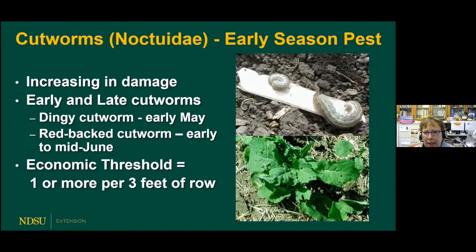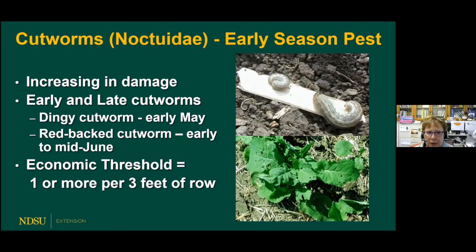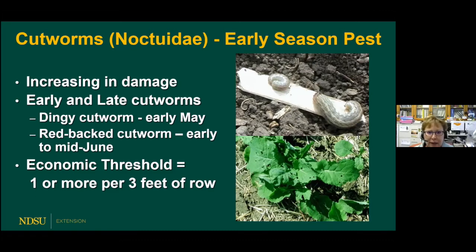Moving on to cutworms — another early season pest and only a problem when the canola crop is small. It will either cut the canola or cause defoliation, and there are small cutworms that do that feeding. It's important to scout for cutworms because insecticide seed treatments do not control them. You need to use a foliar insecticide — a pyrethroid would be best. The threshold is one or more per three feet of row. Cutworms are active from May to June. Dingy cutworm is very common in North Dakota, active May through mid-June, and the redback is a slightly later-season cutworm.